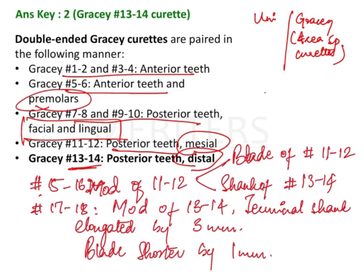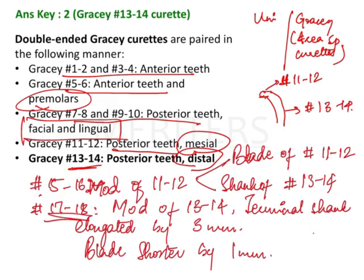Gracey number 15 and 16 is a modification of number 11 and 12. It has the blade of 11 and 12, but the shank is of number 13 and 14. On the other hand, you also have Gracey 17 and 18, which is a modification of 13 and 14 — the terminal shank has been extended by 3 mm and the blade has become shorter by 1 mm.